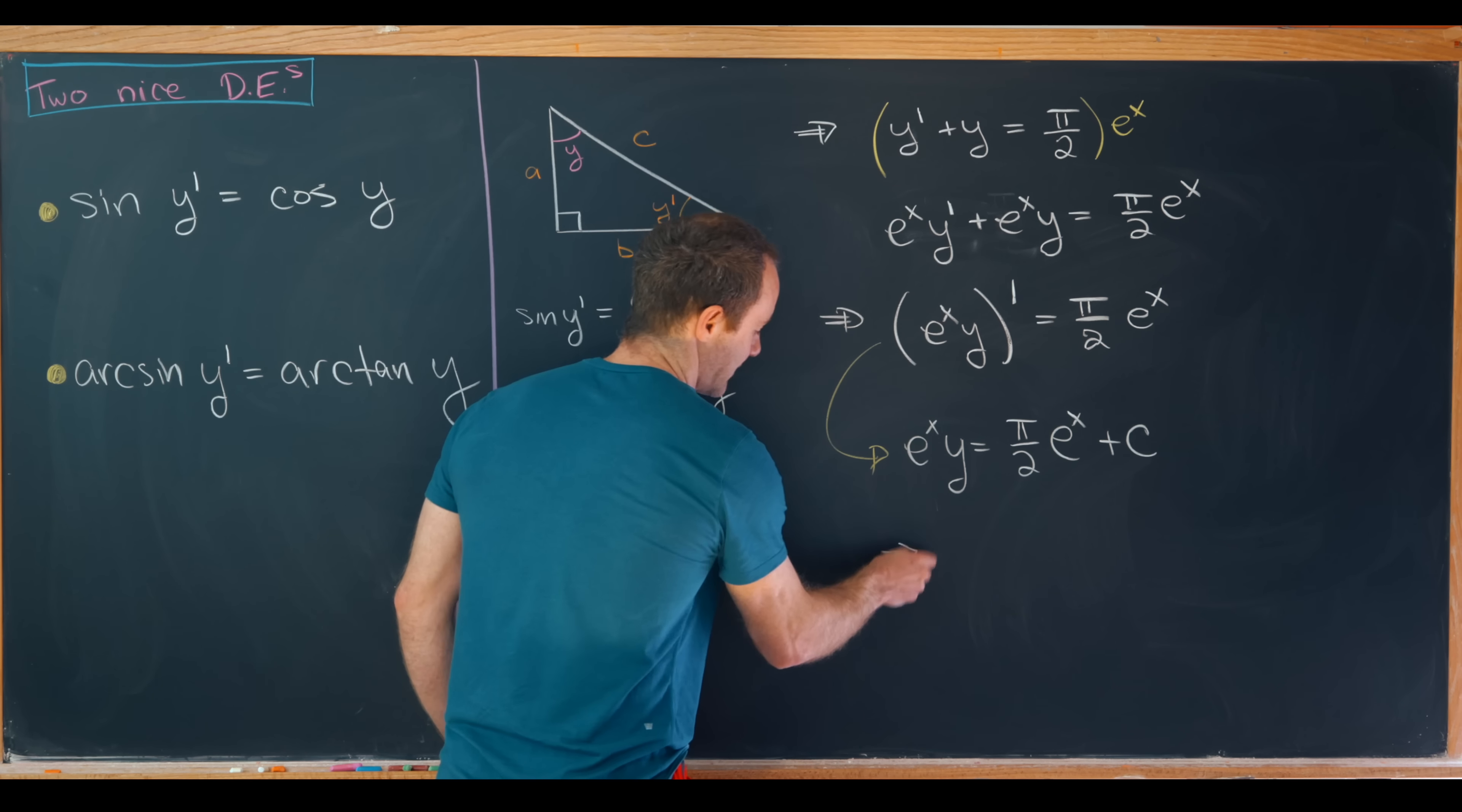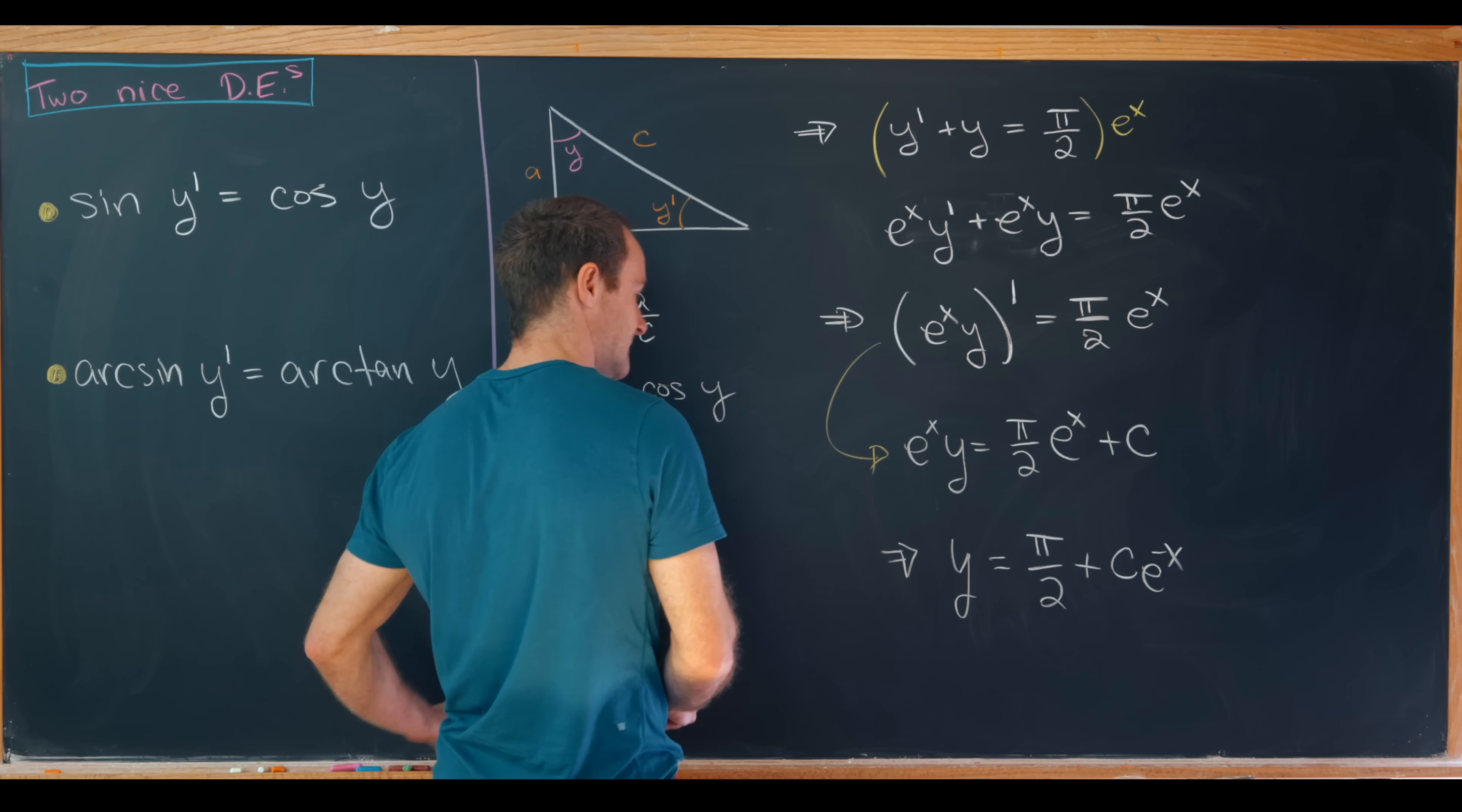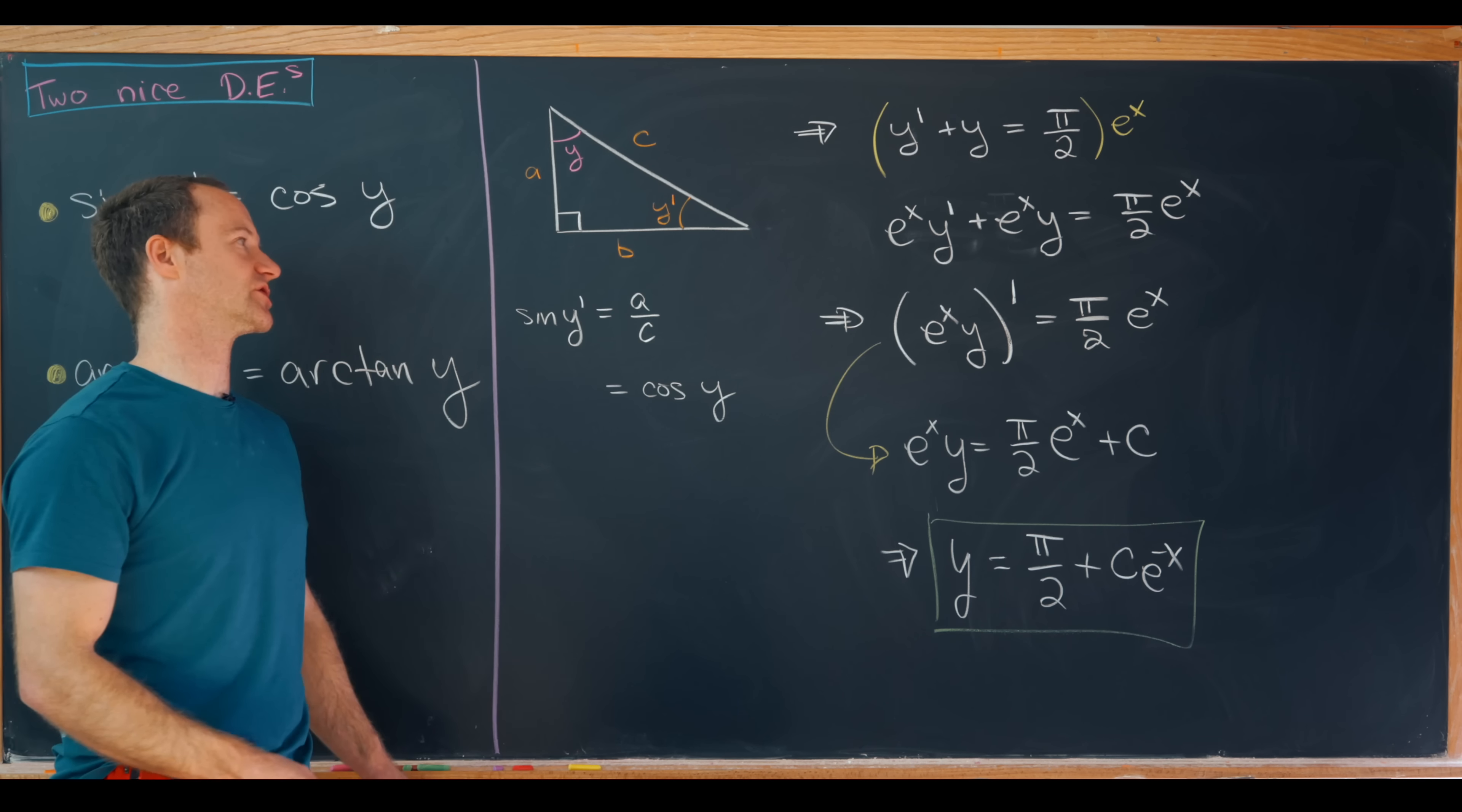Now we can multiply by e to the minus x and we'll see that y is equal to pi over 2 plus some constant times e to the minus x. And so there we have it. We have an expression for y, we have solved this differential equation.